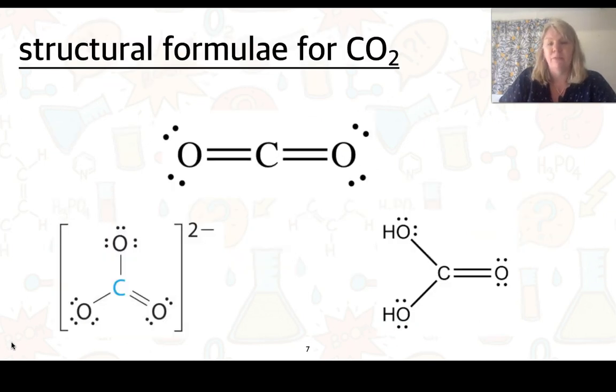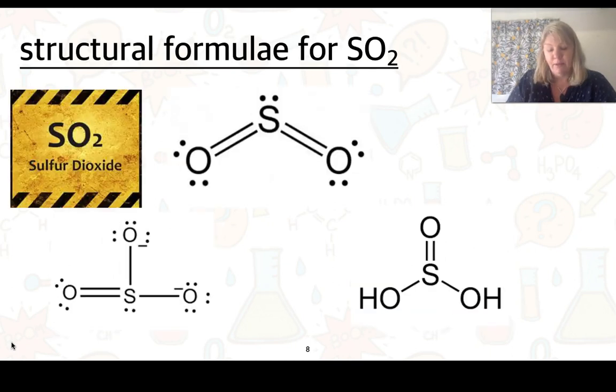So these are the structural formulae that you will need to know in stage 1 chemistry. So we need to be able to draw from our carbon dioxide here, which we've drawn before. We also should be able to draw CO3 2- as well as here we've got H2CO3. Following we have sulfur dioxide, so the structure again, we've seen the V-shaped structure previously. Down the bottom here, we've got our SO3 2- and over here our H2SO3.